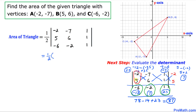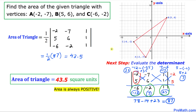The area of this given triangle is simply 1 over 2 times the determinant value, which is 87. When we multiply 1 over 2 times 87, that gives us 43.5. So the area of this triangle is 43.5 square units.